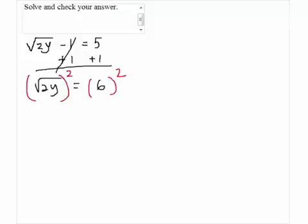Then, we're going to square both sides so that we can take out the radical to have 2y on the left and 36 on the right.